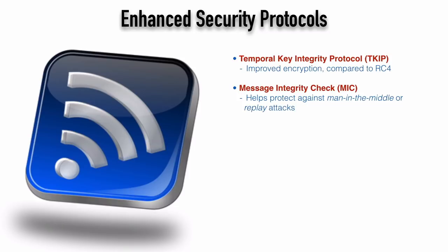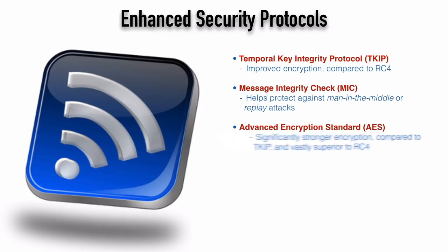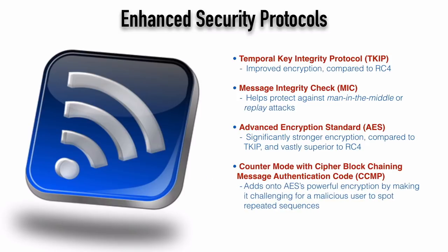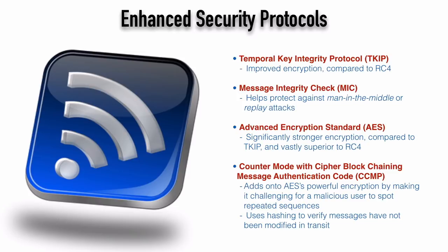While TKIP was a big improvement over RC4, an improvement over TKIP is AES — the Advanced Encryption Standard. In wireless networks it typically uses 128-bit keys and is way better than RC4. Typically we don't see AES used by itself — it's used in conjunction with CCMP, Counter Mode with Cipher Block Chaining Message Authentication Code. CCMP takes advantage of AES's powerful encryption but makes it more challenging to spot repeated sequences. It also adds hashing to ensure messages have not been modified in transit.